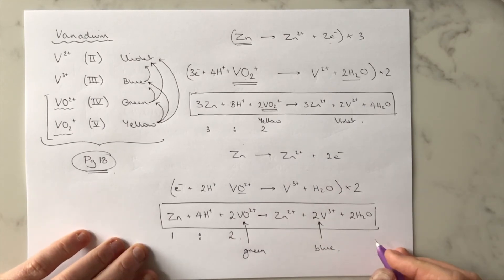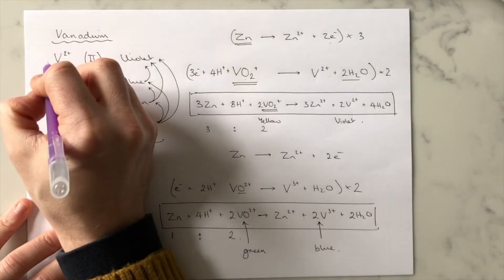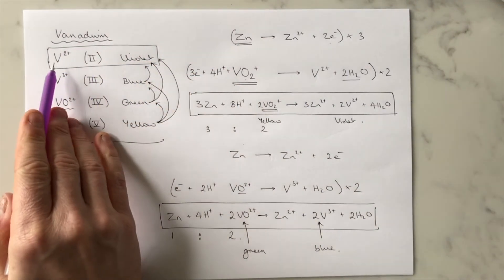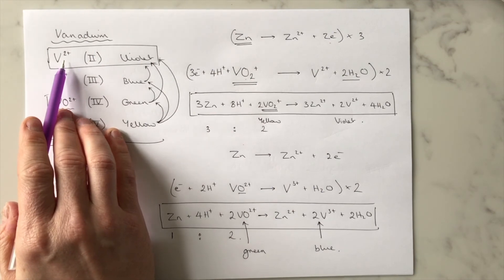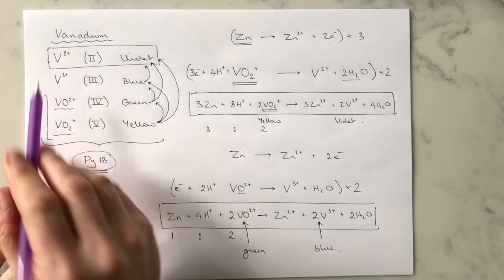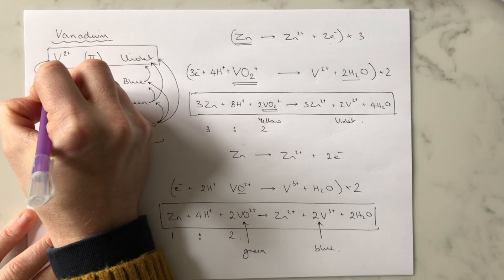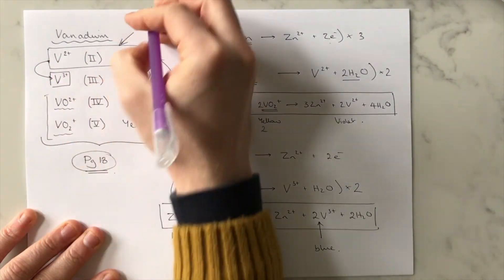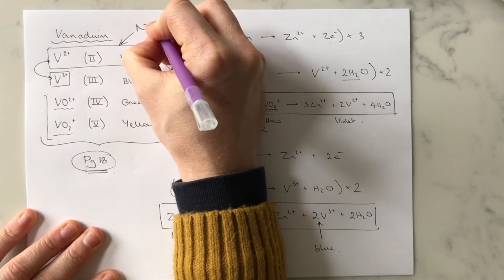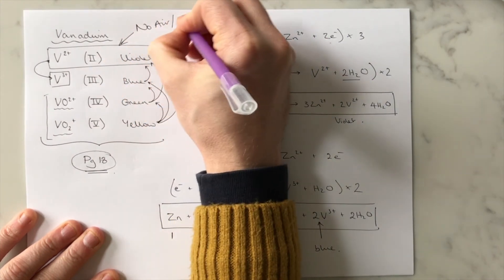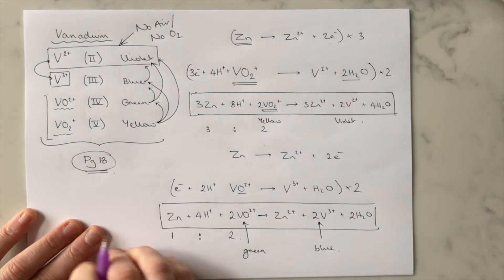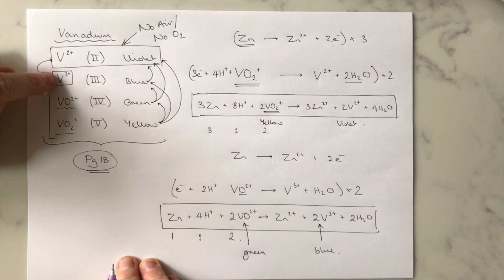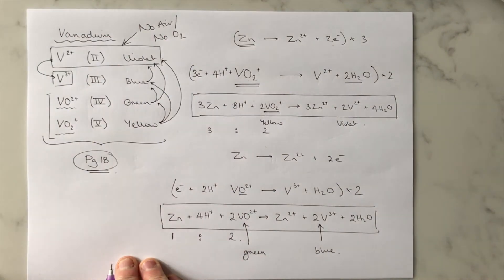One final thing about vanadium: V²⁺ is really hard to form because the moment it's formed, oxygen in the atmosphere reacts with it to oxidise it back up to V³⁺. So if you wanted to form V²⁺, you'd need no air or oxygen present, because the V²⁺ ends up getting oxidised back to V³⁺ if oxygen gas is present.